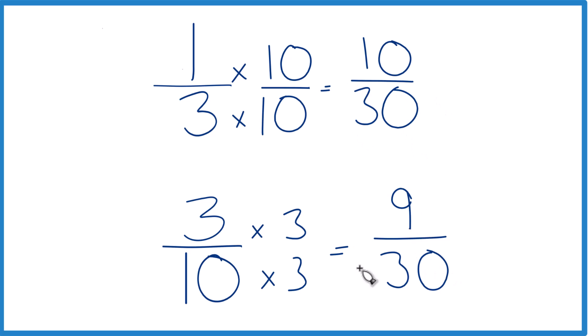So now, same denominator, compare the numerators. Ten is larger than nine, and since this is equivalent and this is equivalent, one-third, that's larger than three-tenths.